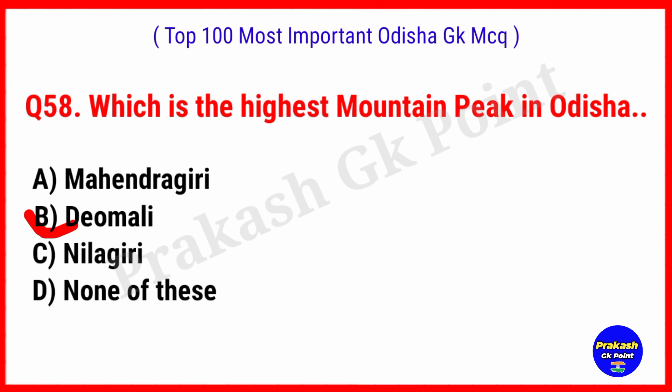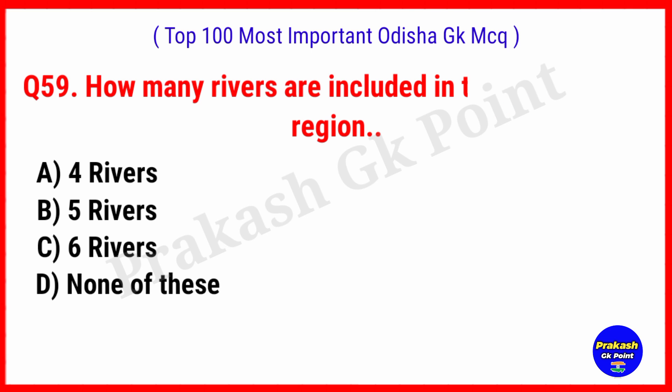Which is the highest mountain peak in Odisha? Answer: Option B, Deomali. How many rivers are included in the Hexadelta-type region? Answer: Option C, 6 rivers.